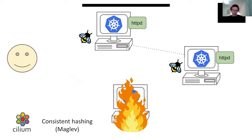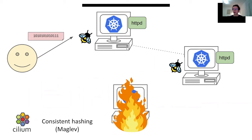Another example is consistent hashing. With Cilium, we have implemented the Maglev algorithm, which means that when the intermediate node that previously served client requests goes down, another node will be able to select the same endpoints, meaning that no open connections will be disrupted.